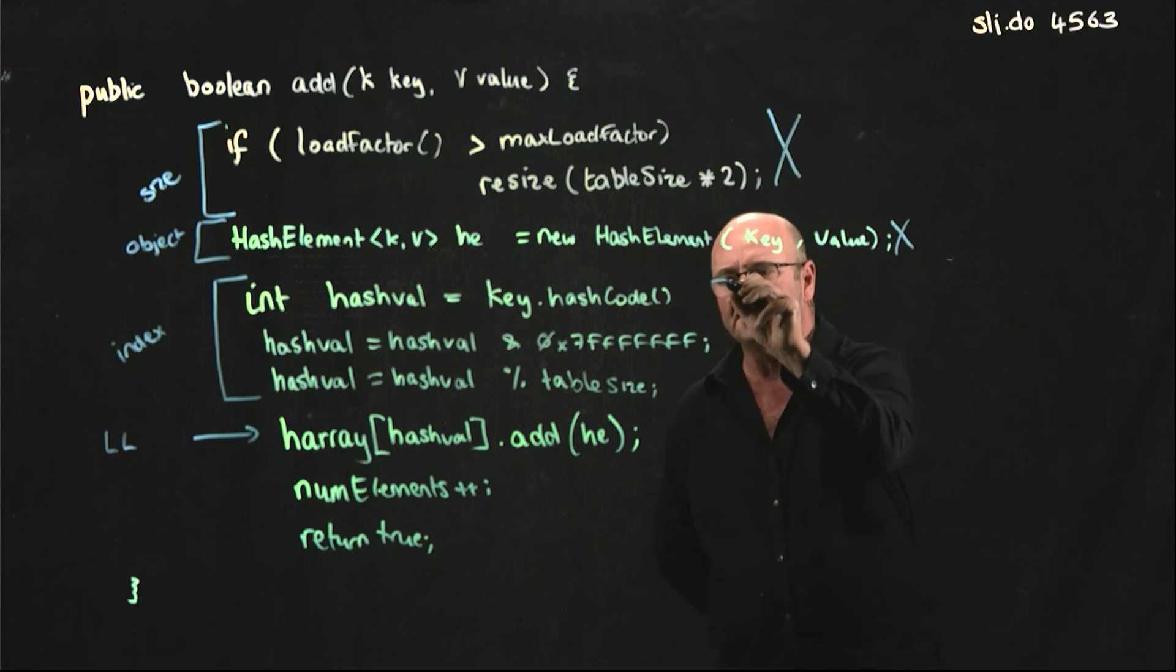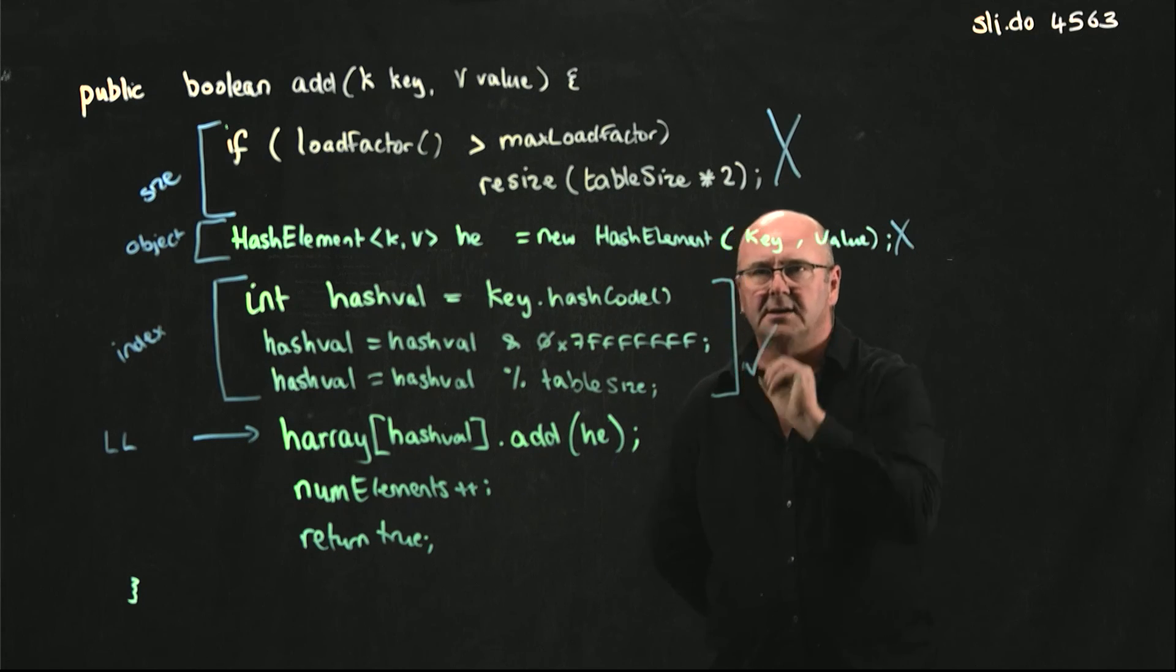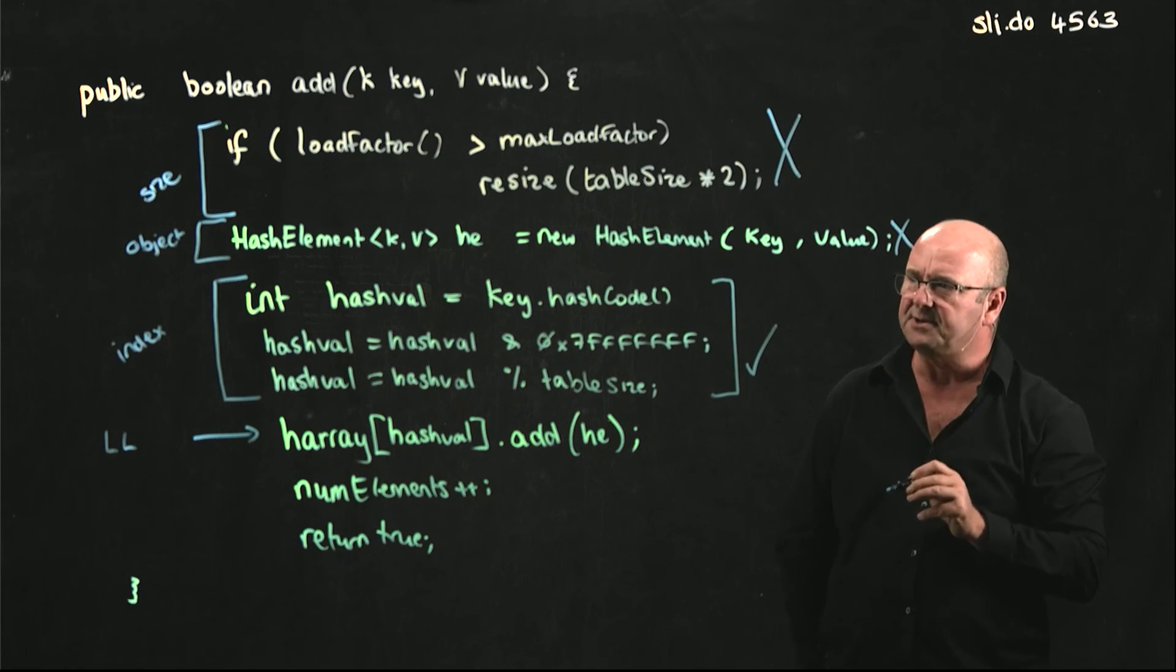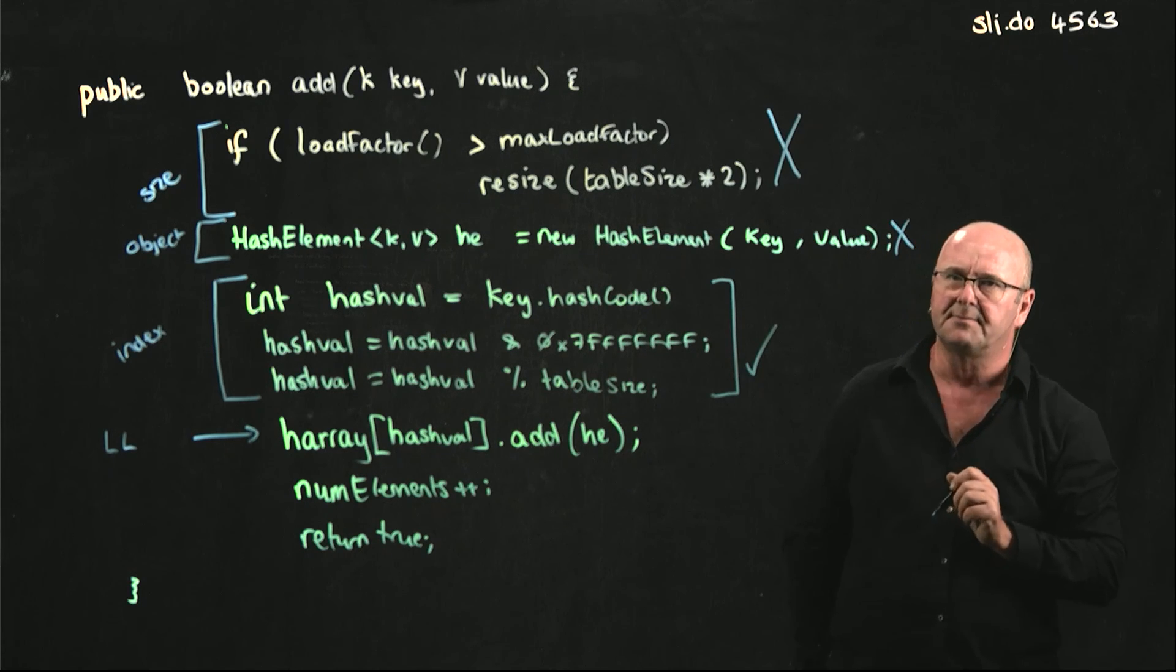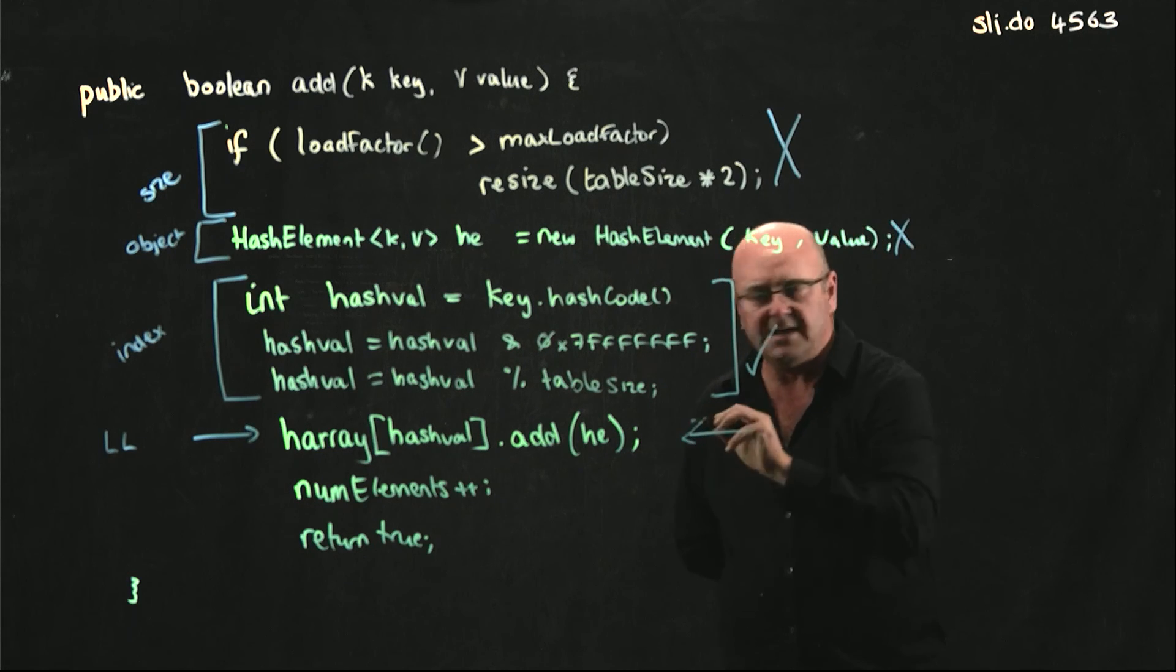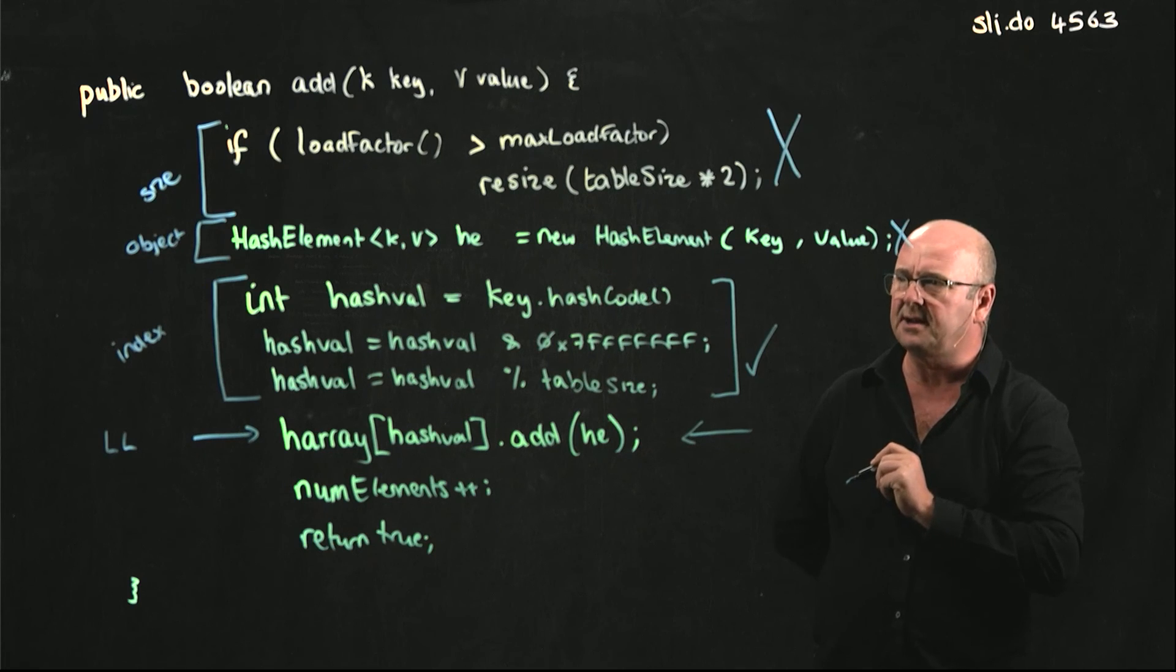For our remove method, we do need to get the hash code from the key, make it positive, and mod it on the table size. And for our remove method, we do call our linked list. And what do we call in our linked list?